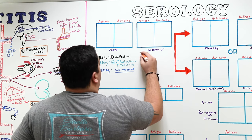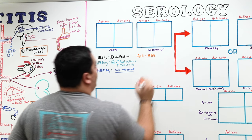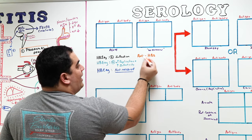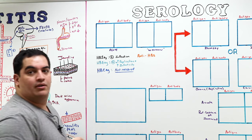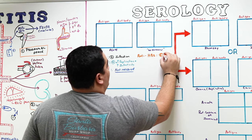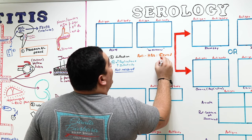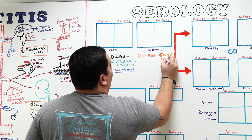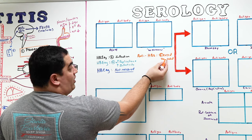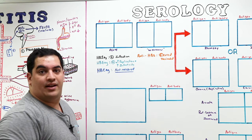The next thing is Anti-HBs — the antibody against the hepatitis B virus surface antigen. If this is positive, it means one of two things: the patient is cured — they produced antibodies and completely cleared the virus — or they were vaccinated against hepatitis B.